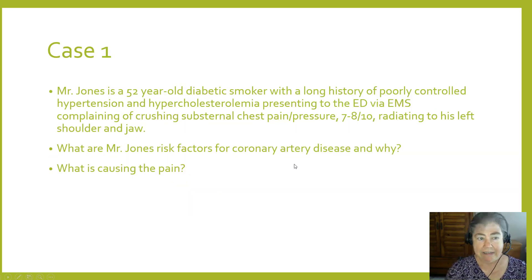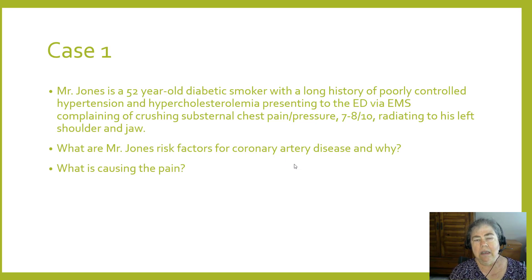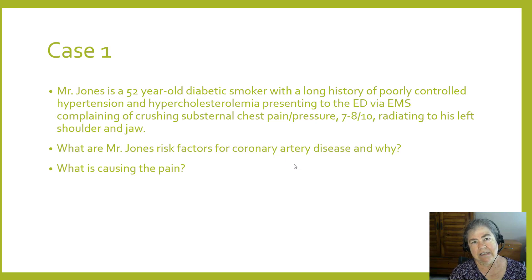Our first case: a 52-year-old diabetic male smoker with a long history of poorly controlled hypertension and hypercholesterolemia comes to the emergency department via ambulance complaining of crushing substernal chest pressure, seven to eight out of ten, radiating to his left shoulder and left jaw. First question: what are Mr. Jones's risk factors for coronary artery disease, and why are they risk factors? Second: what's causing the pain? Think about risk factors while I discuss what's causing the pain.